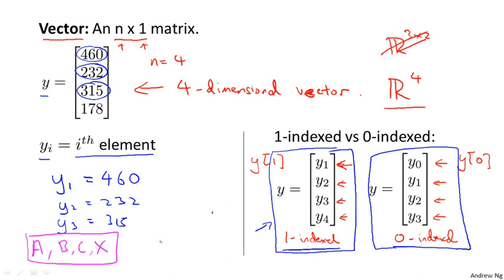And usually we'll use lowercase like a, b, x, y to refer to either numbers, just real numbers or scalars, or to vectors. But this isn't always true, but this is the more common notation where we use lowercase y to refer to a vector. And we usually use uppercase to refer to a matrix.